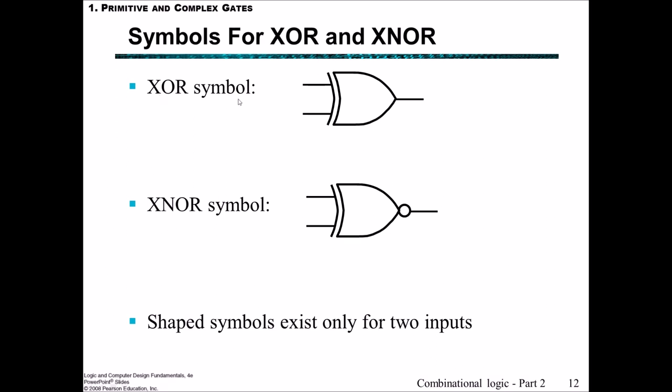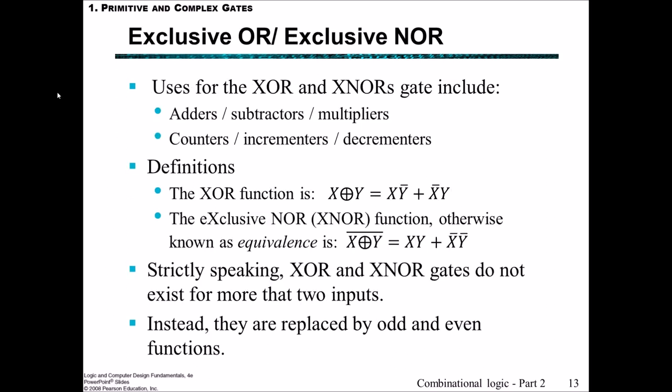This is the symbol for XOR, so it looks just like an OR but it has this extra line here. And this is the symbol for XNOR, which is the same as the XOR but with this little bubble on the end. And these XOR and XNOR are really only defined for two inputs, so there's only shape symbols for the two inputs. Otherwise you have to group them, and we'll show that later on. Exclusive OR and exclusive NOR gates are very useful. They can be used in adders, subtractors, multipliers, counters, decrementors, incrementors.